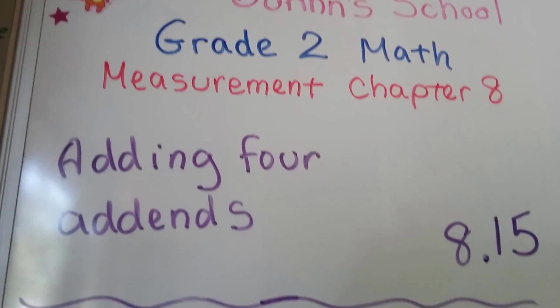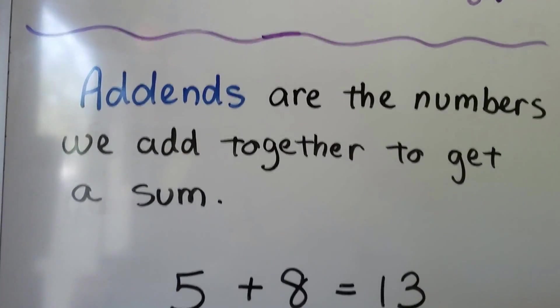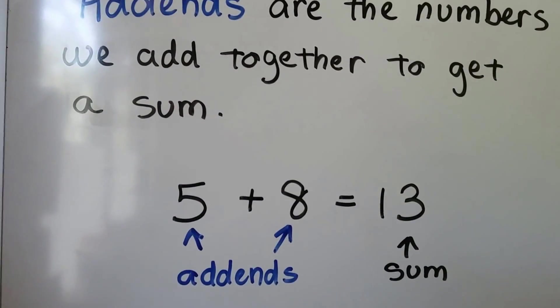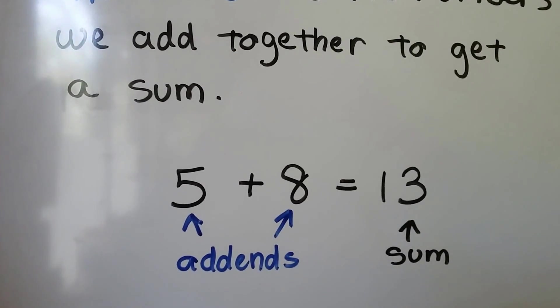Adding four addends. Remember, addends are the numbers we add together to get a sum. We have 5 plus 8 equals 13. The 5 and the 8 are the addends and the 13 is the sum.